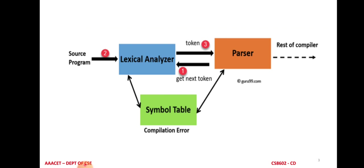After receiving the token, the parser sends a request to the lexical analyzer in the form of 'get next token.' After receiving this request, the lexical analyzer identifies the next token by reading the source program from left to right, and simultaneously the work continues to the next phase, which is the semantic analyzer.